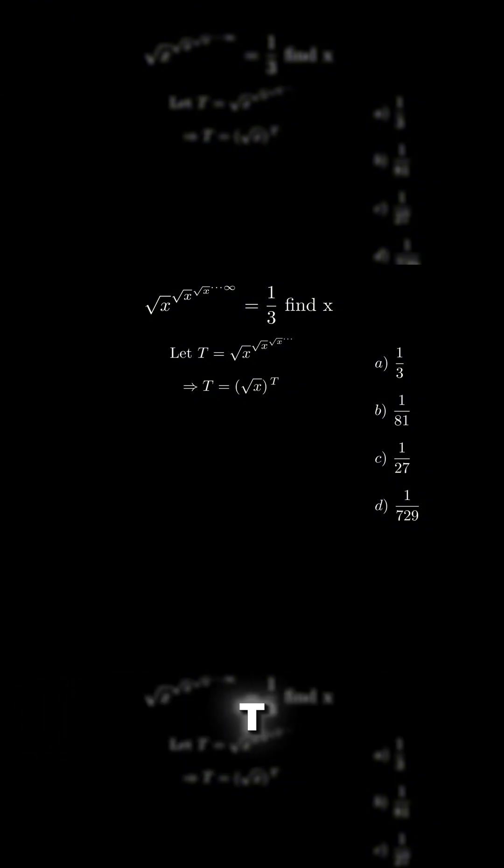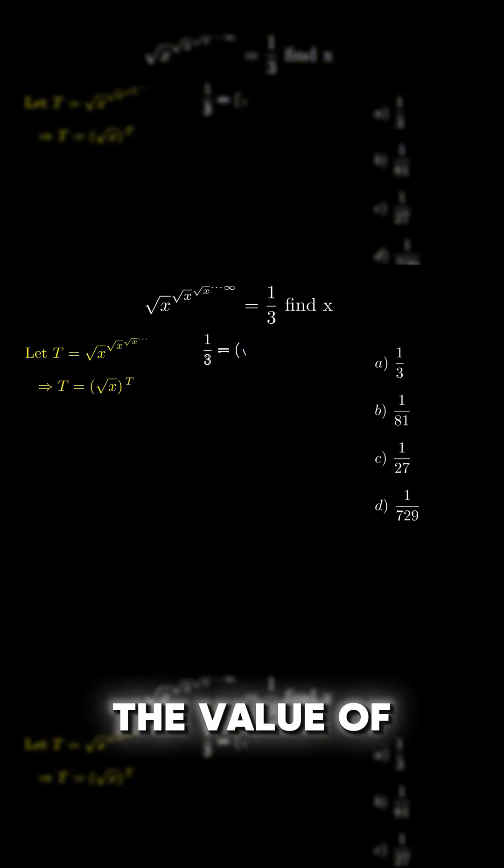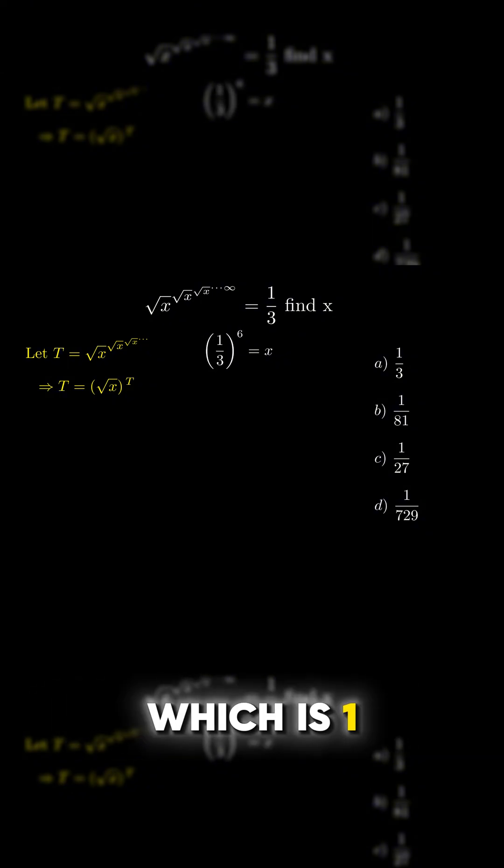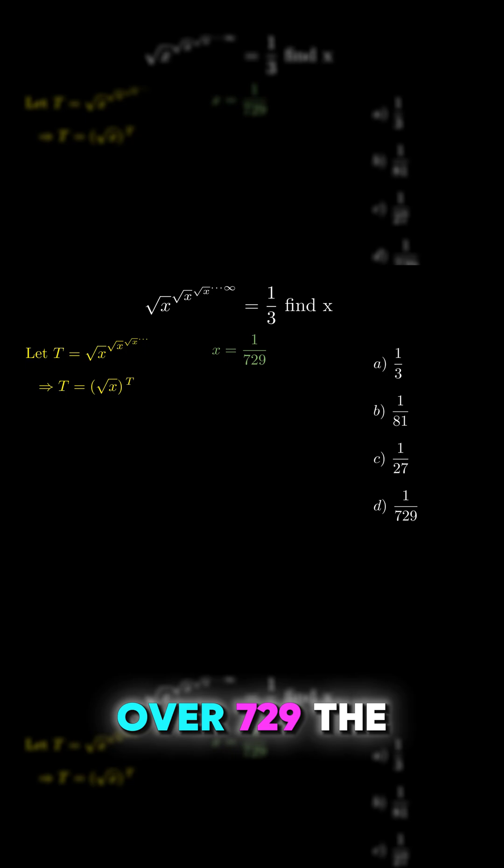Now that we know what is t, we can substitute the value of 1 over 3. Now we just do some simple calculations and we should get 1 over 3 power of 6 equal to x, which is 1 over 729. The answer is d.